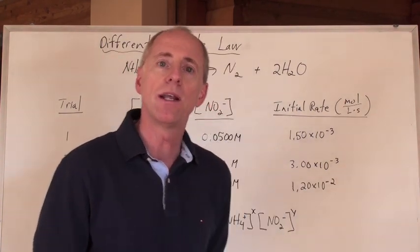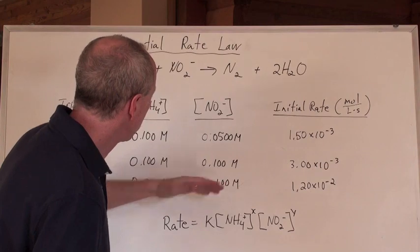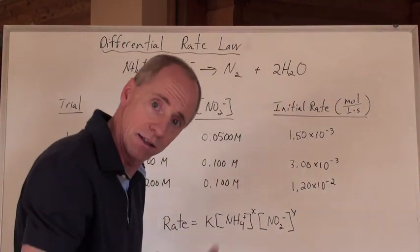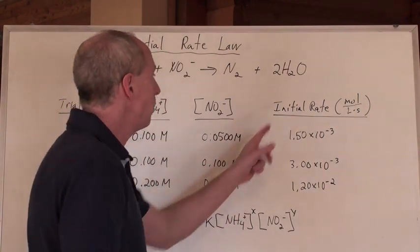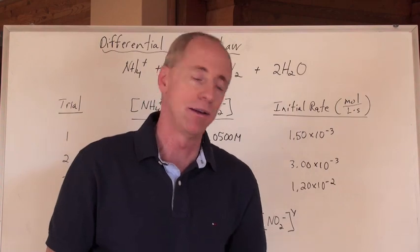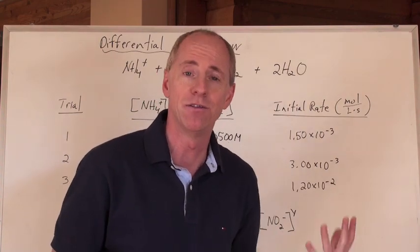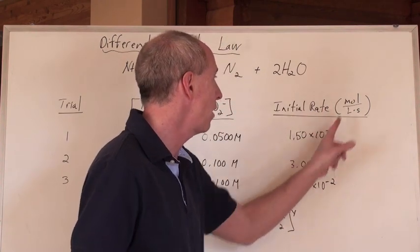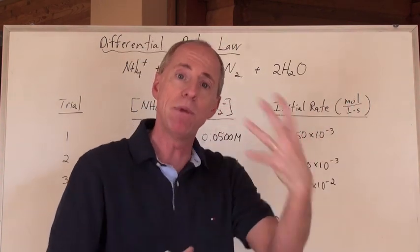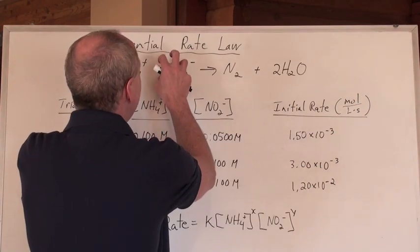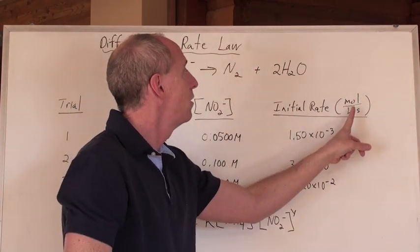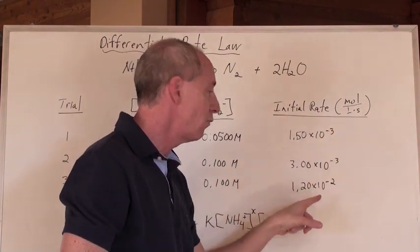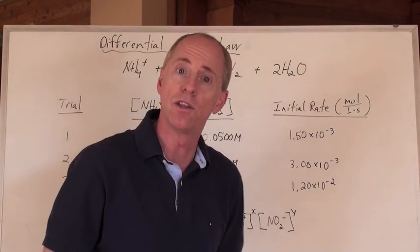So the question is, determine the rate law given this information here. And what you're given is an experiment where this reaction is conducted in a laboratory, and the ability to be able to calculate the initial rate of reaction is there. Let's just say that you've got the ability to be able to calculate that rate in moles per liter per second. That is moles per liter seconds, that's the unit there. And that initial rate is given for three different trials for this reaction.